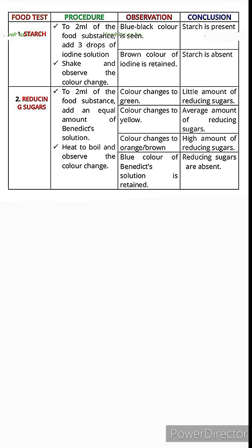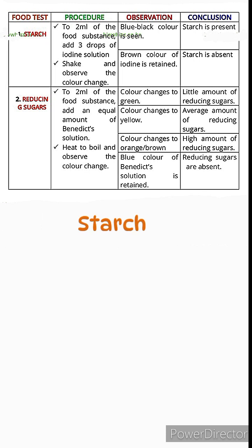Food tests are tests carried out with specific reagents to find out the identity of a certain food substance. There are six common ones: starch, reducing sugars, non-reducing sugars, lipids, proteins, and ascorbic acid (vitamin C). The first one is starch — iodine is the reagent used to test for starch.